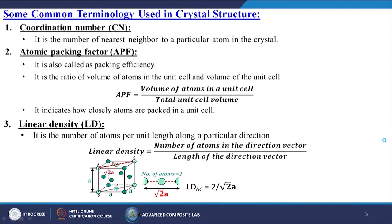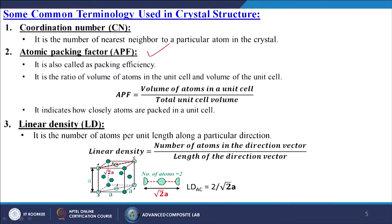Let us discuss some common terminology used for determining crystal structure. First is the coordination number (CN): it is the number of nearest neighbours to a particular atom in the crystal. Next is the atomic packing factor (APF), also called packing efficiency. It is the ratio of volume of atoms in the unit cell to the volume of the unit cell, and indicates how closely atoms are packed in a unit cell.